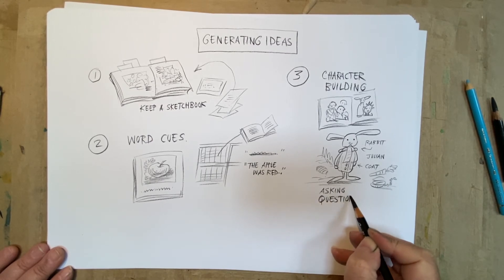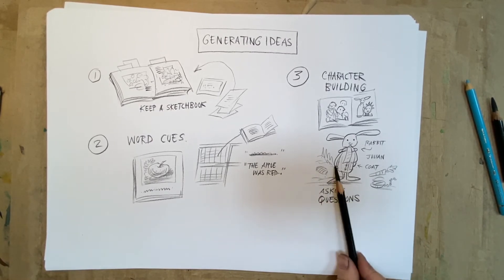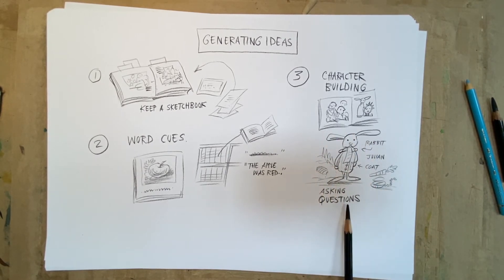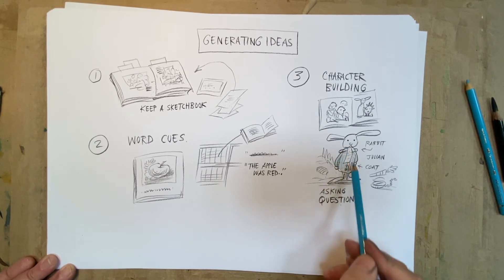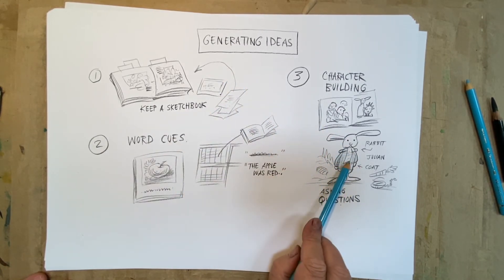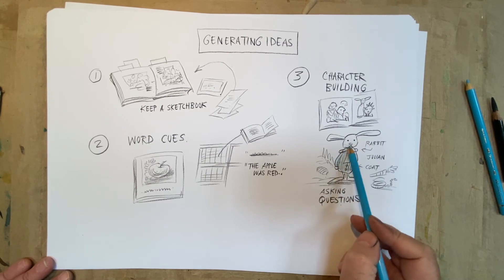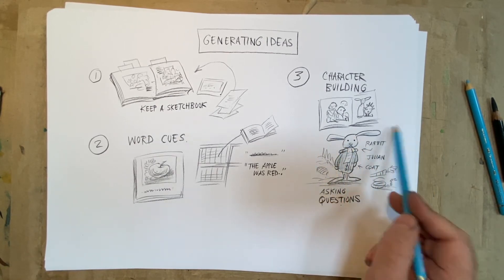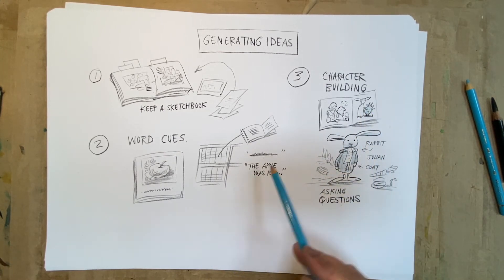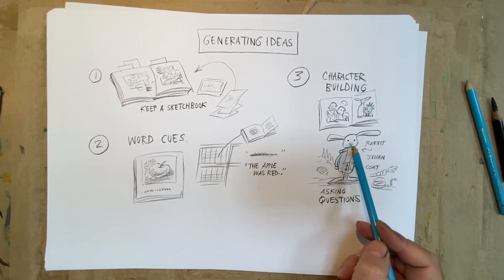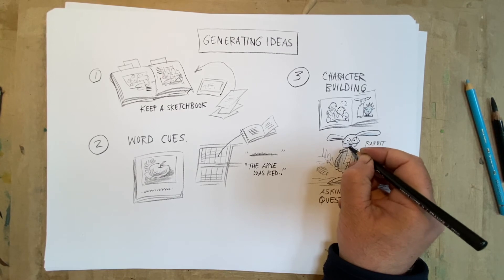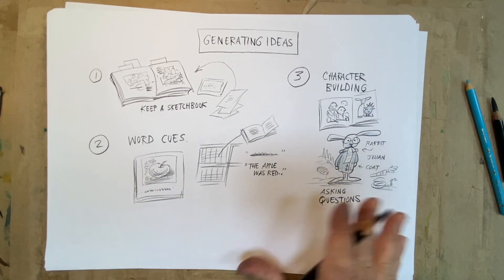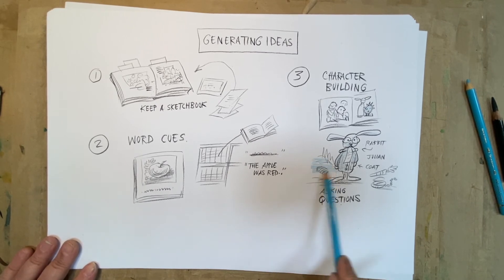That way you start to build both your character and the world of your character and the story of your character. As an illustrator, what you are doing is illustrating a self-built story — generating ideas. Do this over and over again. If Julian is irritating you and doesn't do what you want, move on to Eric the Hedgehog; there's always another page to turn and a way to keep generating. Julian has nice glasses — I want to tell Julian's story, I want to disappear into the rabbit hole with him.